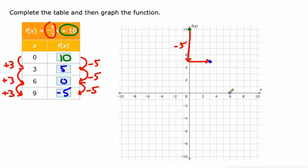Down 5, write 3. There's 6, 0. Down 5, write 3. There's 9, negative 5. Yep.